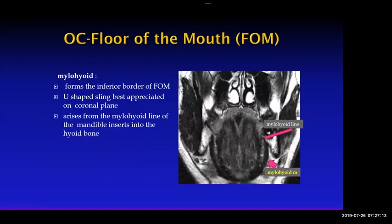The floor of mouth is formed by the mylohyoid muscle, which forms a sling and attaches to the mandible at the mylohyoid line. There is mucosa covering it — the floor of mouth is essentially the mucosa covering the mylohyoid muscle. If you move your tongue up and feel what's below, that's your floor of mouth.